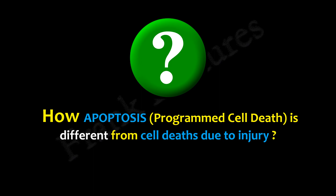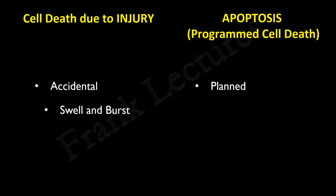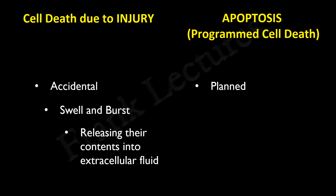We can ask how apoptosis is different from cell death due to injury. The first difference is that cell death due to injury is accidental, but apoptosis is planned. Cells that die due to damage from external injury typically swell and burst, and their contents are released into the extracellular fluid. This often results in inflammation. The term for this type of cell death is necrosis. In necrosis, the immune system must come into action and the surrounding damaged tissues must be repaired and replaced.